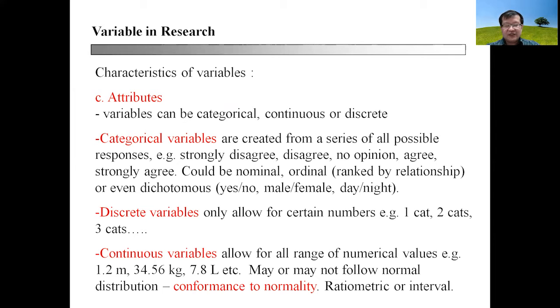You can also have discrete variables that only allow for certain numbers. For example, one cat, two cats, three cats. You can never have anything in between, unless you are looking at a carcass in the post-mortem room.